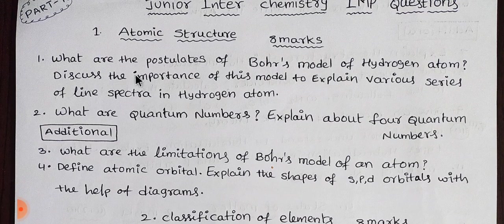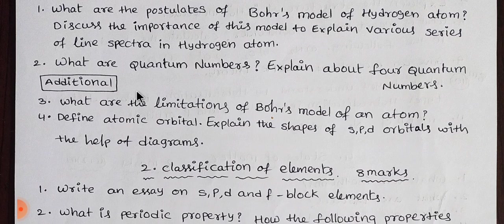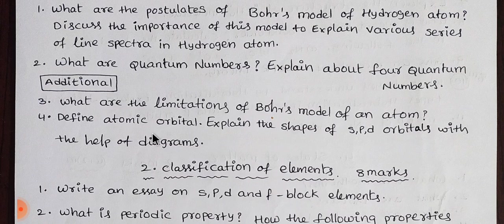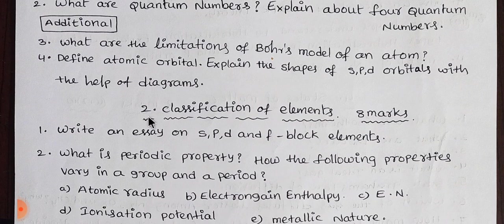Next, the second lesson is quantum numbers. First complete the main topics, then the additional 2 short answer questions. Bohr's limitations is an additional topic. Atomic orbital shapes and diagrams are also included. This completes the first lesson.